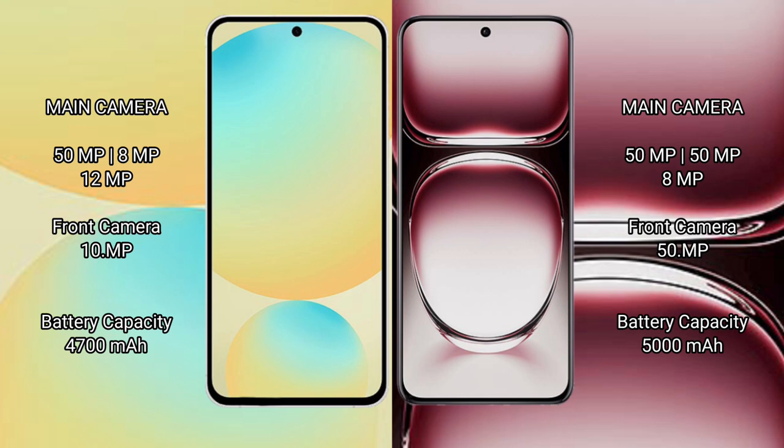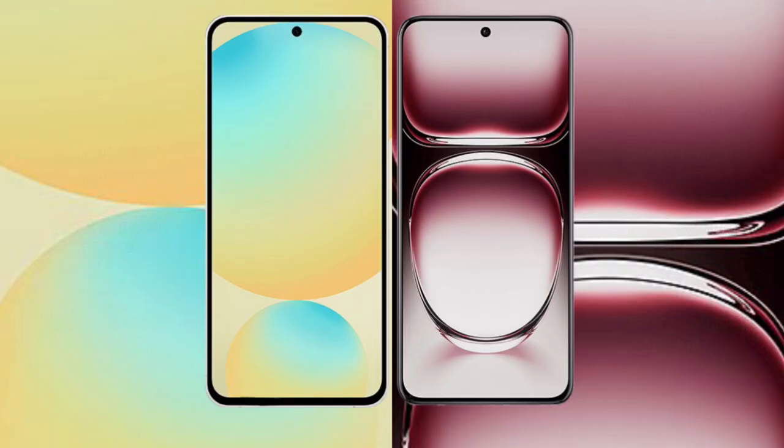Samsung Galaxy S24 FE has a 4600mAh battery with 25W fast charging support. Oppo Reno 12 Pro has a 5000mAh battery with 90W fast charging support.